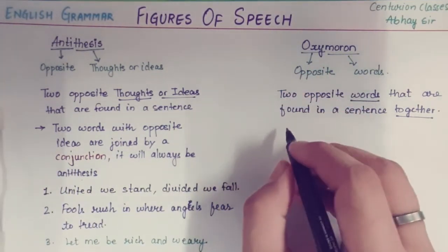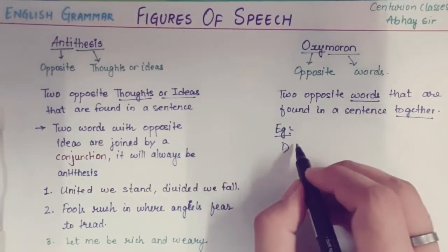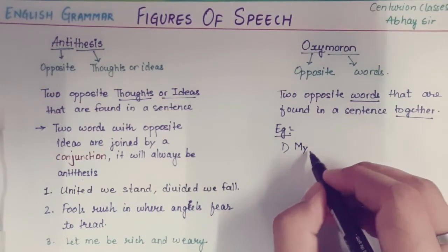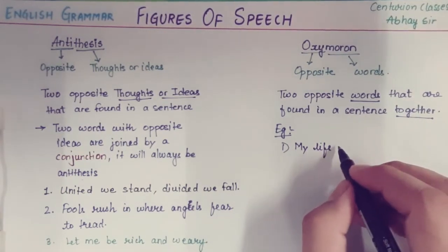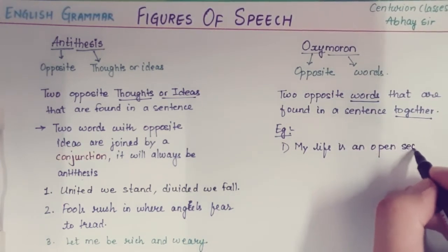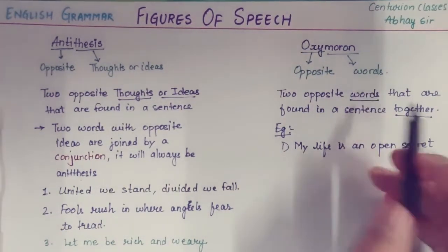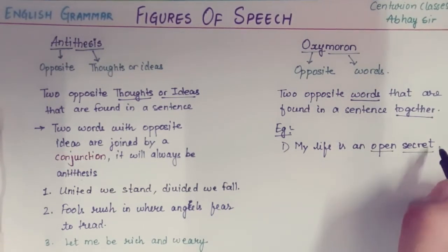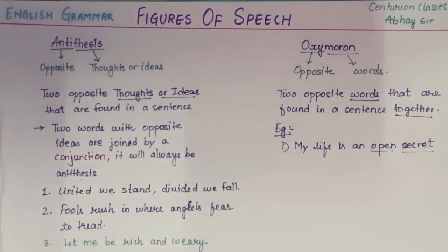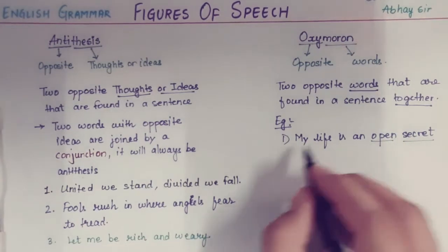Now let us talk about oxymoron and see some examples. The first one is: 'My life is an open secret.' As you can see, there is no conjunction involved, and we are talking about words. 'Open' means something you can easily talk about and share, while 'secret' is something you need to hide. So 'open secret' — two opposite words coming together — is your oxymoron.